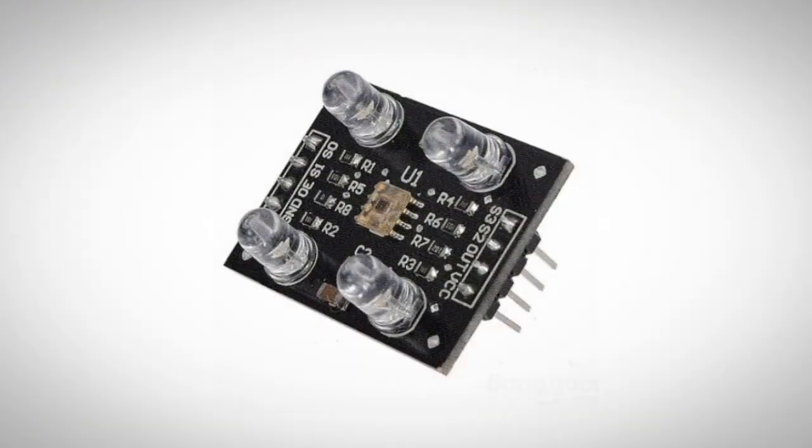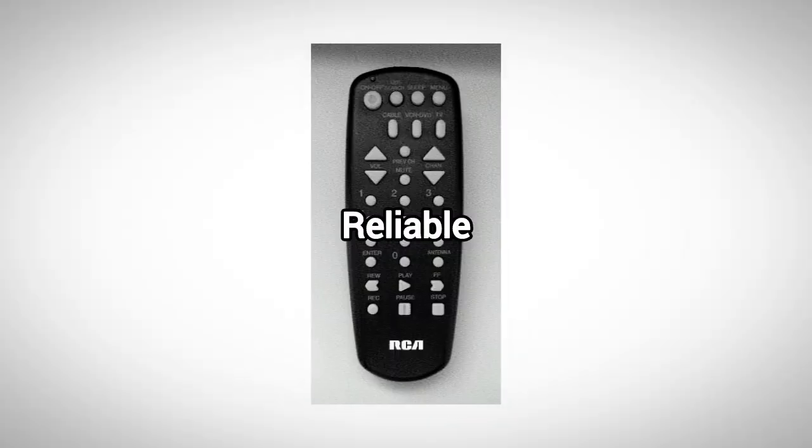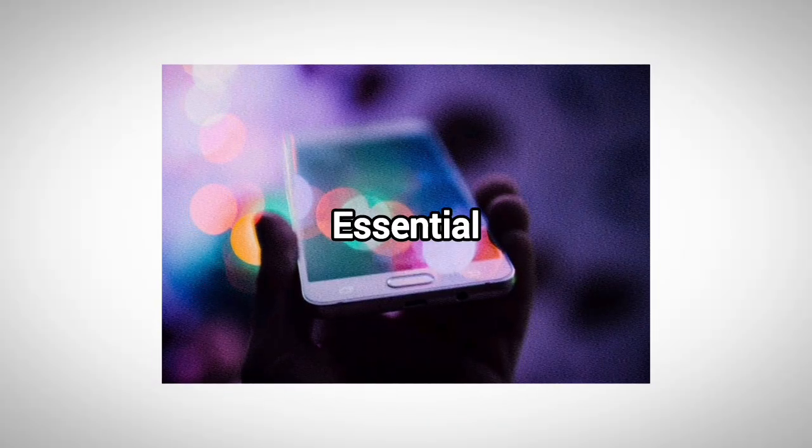That's why you'll find photodiodes in remote controls, light sensors, and automatic brightness systems in phones and displays. They're fast, reliable, and essential in devices that respond to light.